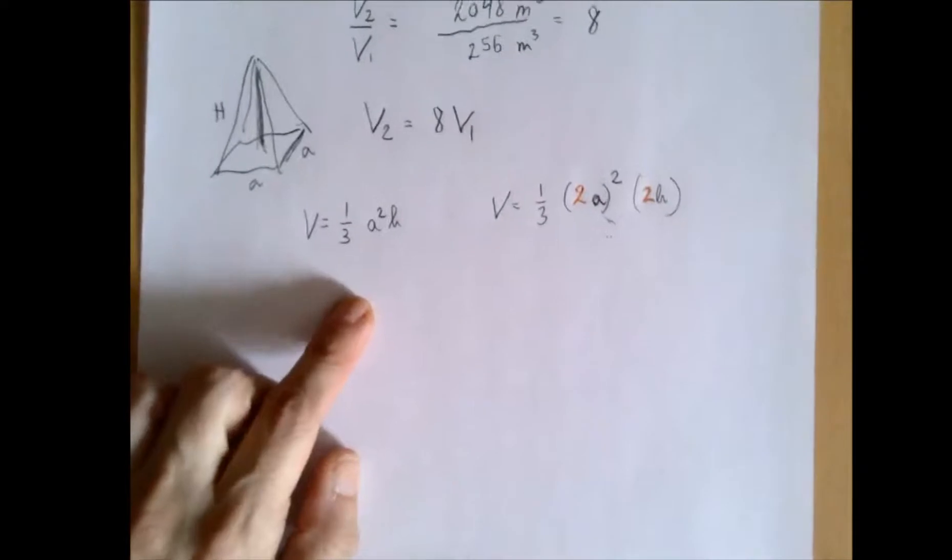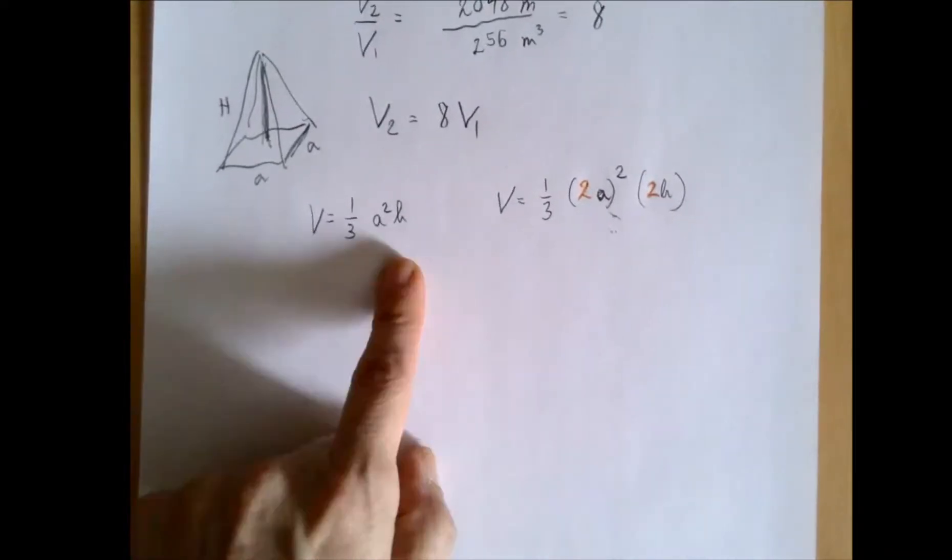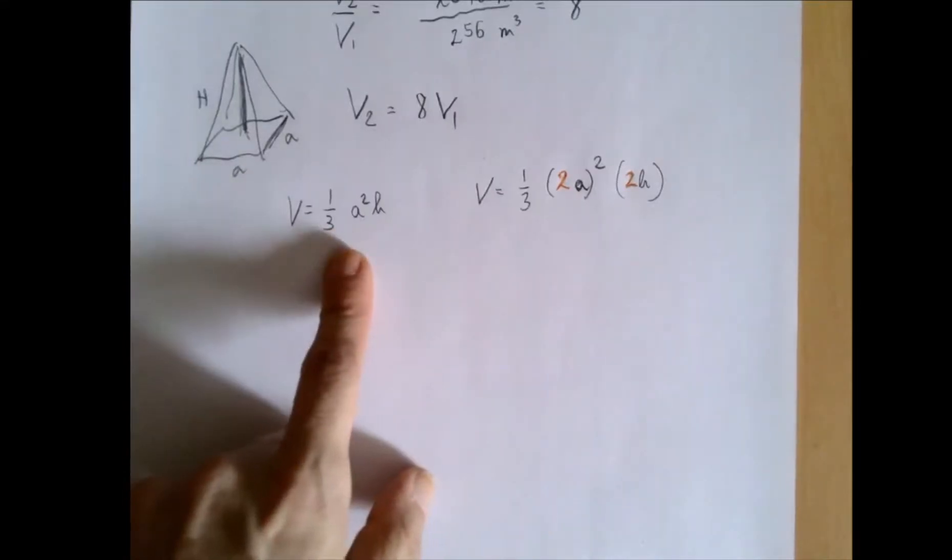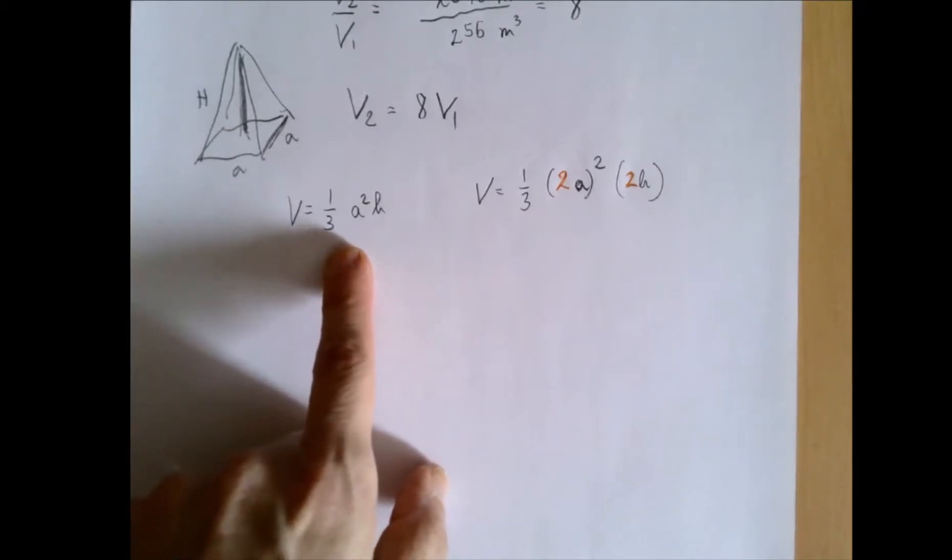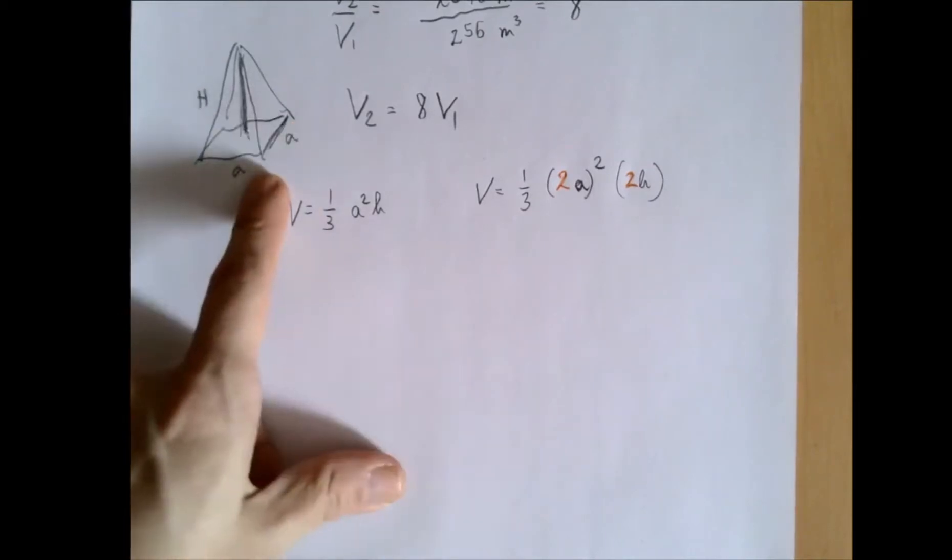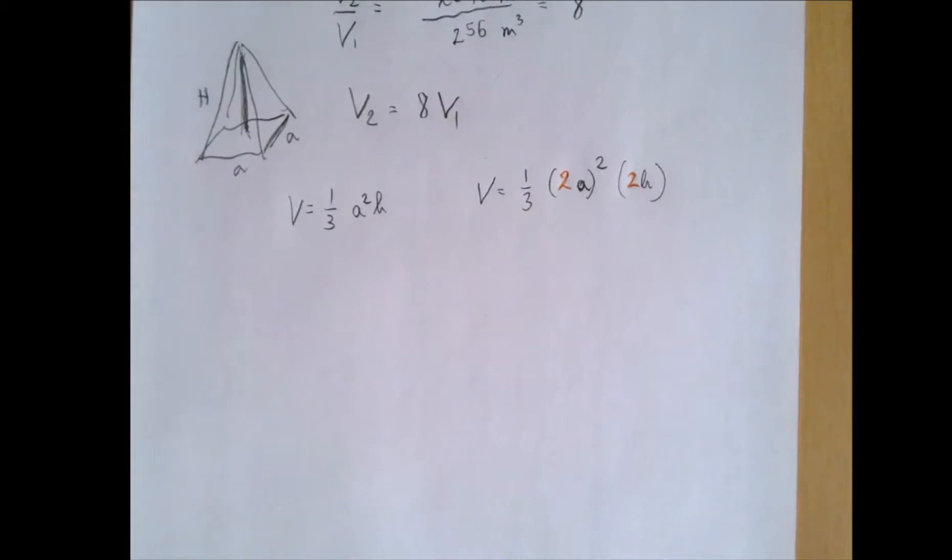Consider the first volume. It was 1/3 A squared H. Let's not worry about the numbers right now. Sometimes sticking with the letters is more revealing. So what happens if we take a similar one that is doubled? Well, the side will move up from A to 2A, and the height will change from H to 2H.